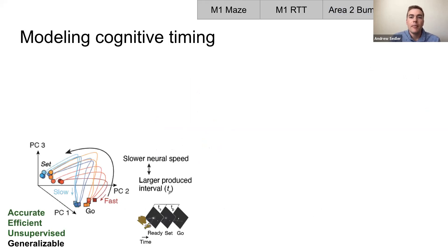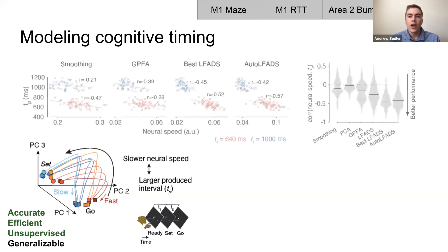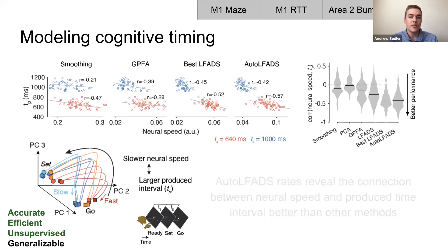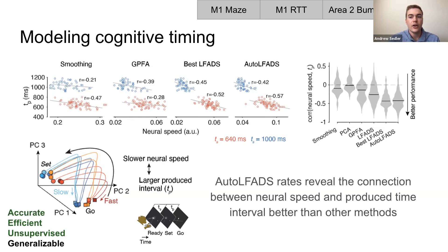In the cognitive timing task, it's been shown that neural speed in DMFC during the produced interval is negatively correlated with the length of the produced interval. Neural speed, analogous to kinematic speed, is defined as the norm of the change in firing rates over time. We computed neural speed for neural representations obtained by smoothing, GPFA, random search, and auto LFADS. Auto LFADS reveals this negative correlation better than nearly all other methods, but is comparable with the best LFADS model from the random search. However, finding the best LFADS model requires extra computation and supervision data. We applied auto LFADS out of the box to a new brain area whose activity depends on the confluence of both inputs and internal dynamics, and achieved better results from PSTH reconstruction and decoding than any other method.